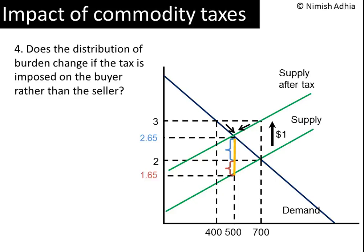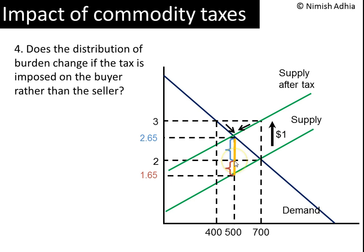In a previous video, I had showed how a commodity tax of $1 collected from the sellers causes both the buyers and the sellers to experience a burden of the tax. In this particular example, the consumers experienced a burden of $0.65 and producers of $0.35. The question we now ask is: would the distribution of burden between the producer and the consumer be any different if the legal incidence of the tax had been on the buyers?